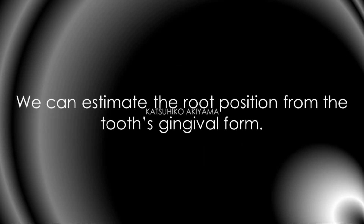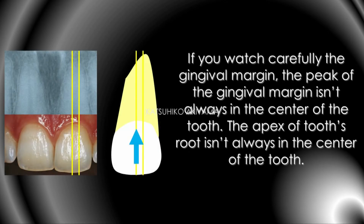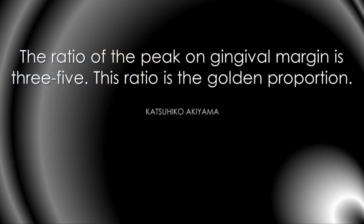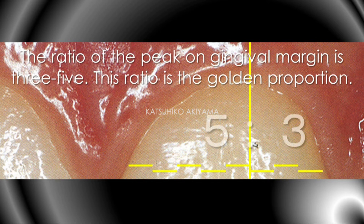We can estimate the root's position from the tooth's gingiva form. If you watch carefully the gingiva margin, the peak of the gingiva margin isn't always in the center of the tooth. The apex of a tooth's root isn't always in the center of the tooth. The ratio of the peak on the gingiva margin is 3 to 5 — this ratio is what we call the golden proportion.